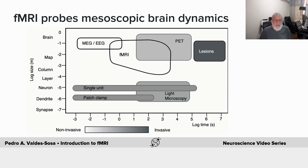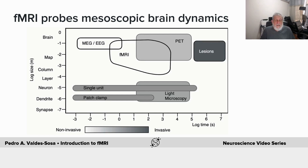Why has fMRI been so popular? Because it allows us the in vivo — that is to say, in life — study of brain dynamics in human beings at a mesoscopic level: not at the layer of neurons, nor just at the whole brain, but at intermediate levels.